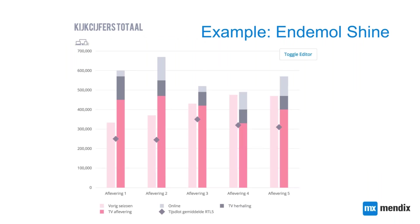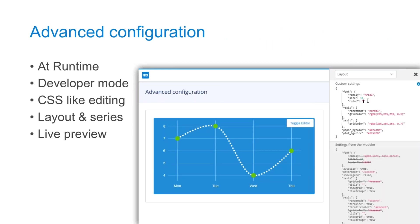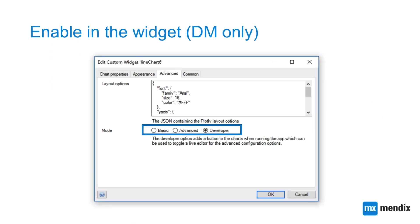One example I really like was built by André for Animal Shine — it's definitely not a standard chart, and it's very cool to see what can be built. In the widget, there are different modes: Basic — which is what you see in the web modeler; Advanced — which also uses your advanced JSON configuration settings; and Developer mode — which gives you an additional button on the chart that opens the runtime editor for live preview.